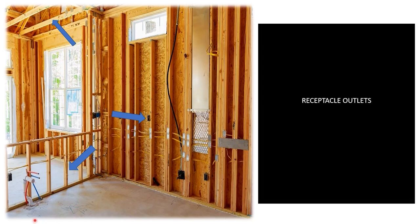The first type of outlets are receptacle outlets. That is a place in a wiring system where we install a receptacle so we can plug in and use utilization equipment. This is technically an outlet, but you have to be very careful throwing around that term — and we're going to learn why here shortly. So this is a receptacle outlet.